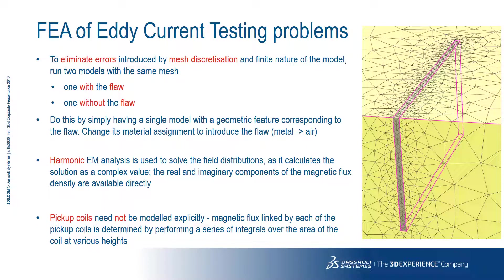Finite element analysis, or FEA, is a numerical analysis technique. The domain is meshed using finite elements. The mesh will give discretization errors due to the approximations involved in the numerical solution process. These can be reduced by using more elements — mesh refinement — but they can never be completely eliminated. To eliminate errors introduced by mesh discretization, we can run two models, one with and one without the flaw present. The difference, therefore, is purely the effect of the flaw, not due to any FEA artifacts.